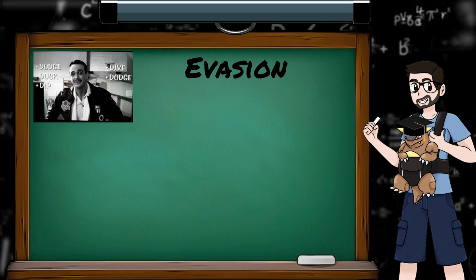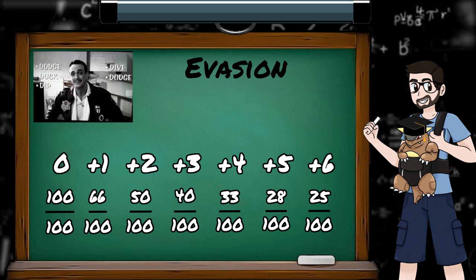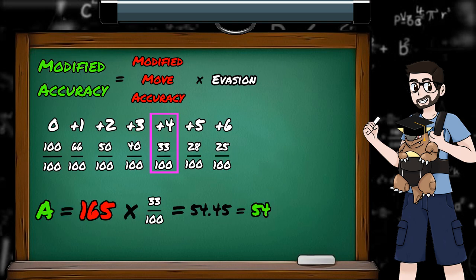Evasion boosting moves affect the user's evasion in the following way. Each time the user uses double team or minimize, their evasion stage increases by 1, and the new evasion modifier is applied to the accuracy equation. If I'm now trying to rock throw a Raichu that's used double team 4 times, my accuracy value will be 165 times 33 over 100, which is 54.45, which gets rounded down to 54. This gives our Onix a 21% chance to hit. In generation 1 there are no items or moves which decrease evasion, so if your enemy starts using these moves, act fast.